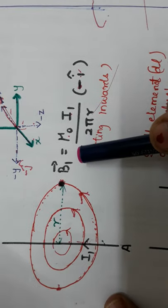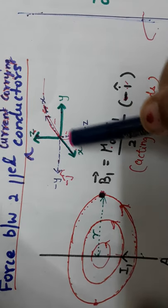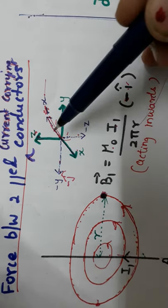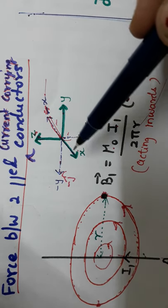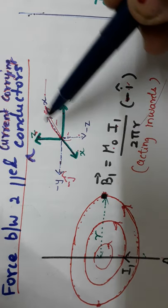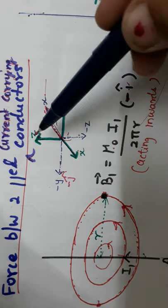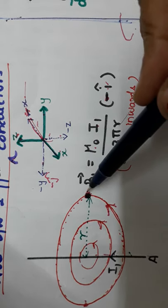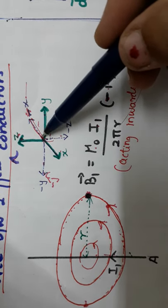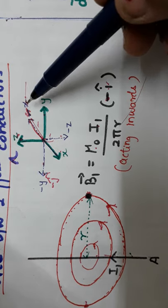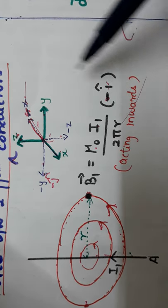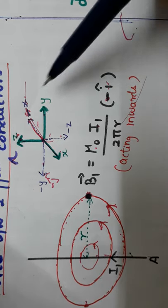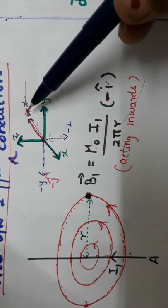Now consider the three mutually perpendicular axes X, Y, and Z, along with their negative counterparts: negative X, negative Y, and negative Z. The magnetic field going into the paper represents the negative X axis, so we introduce the unit vector negative i-cap.